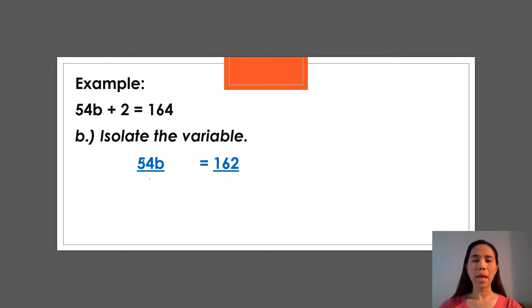Because we have to find this b, the variable, which represents the unknown. That's why it's the 54 that we have to divide, not the b, or not the 162. So if we divide both sides by 54, 54 ÷ 54 = 1. Right? And 162 ÷ 54 is? Yes, it's 3.